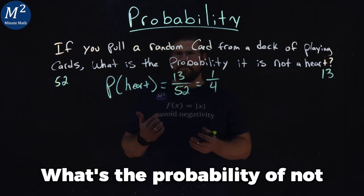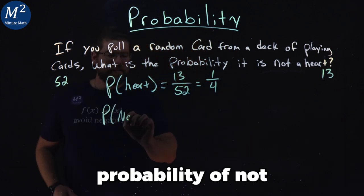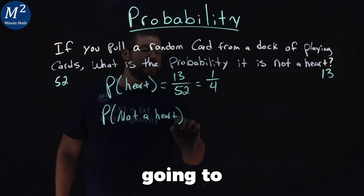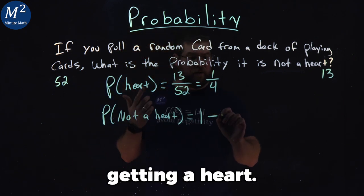What's the probability of not a heart? The probability of not a heart equals one minus the probability of getting a heart.